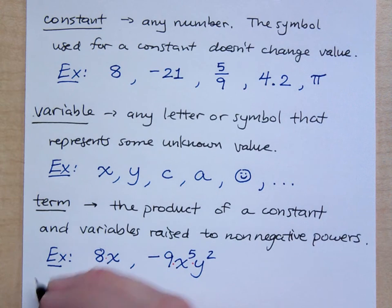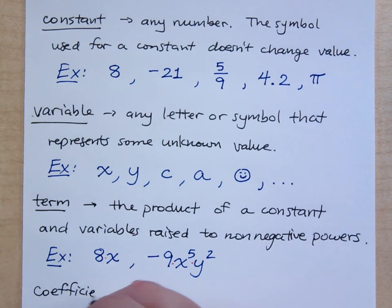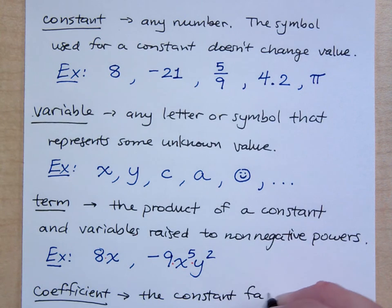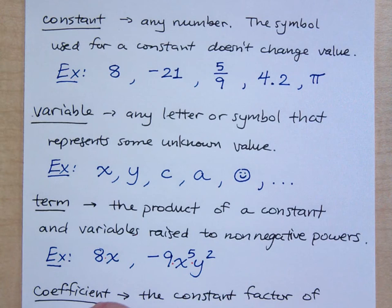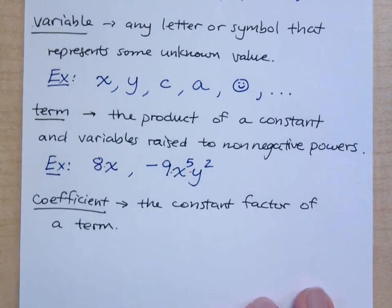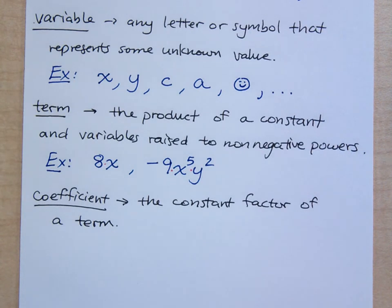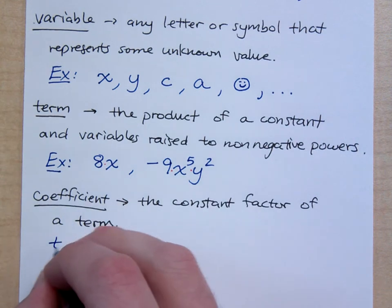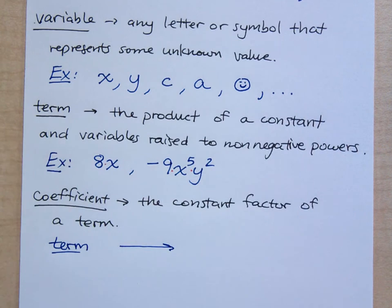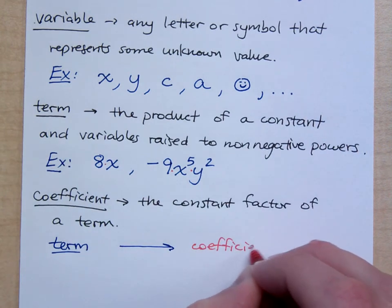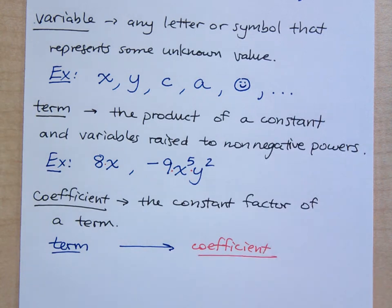When we talk about terms, I also want to talk about the coefficient. The coefficient is the constant factor of a term. A term is a product — multiplication of constants and variables raised to non-negative powers — so whatever that constant factor is, that's the coefficient. It's important to be able to identify the coefficient both now and in later courses like 0308, 03010, and college algebra. The coefficient tells you how much of that term you have.